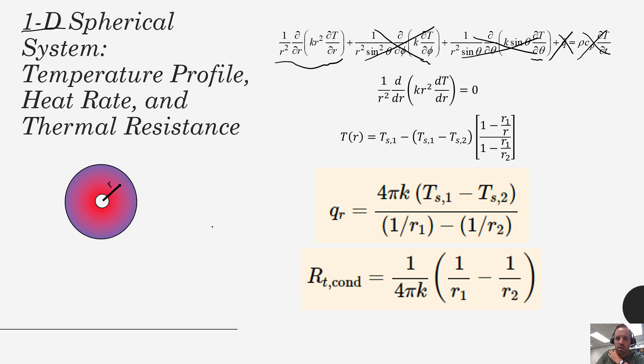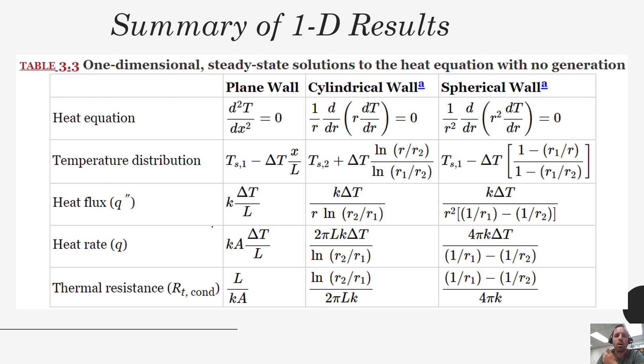However I also wanted to introduce this one handy table. We've done quite a bit of math as we've analyzed these three different types of systems: the plane wall, cylindrical, and spherical. Our textbook contains a really nice table that summarizes all of these different results that we've come up with. A summary of the 1D results and keep in mind that this is for one dimensional systems at steady state and there is no generation and also the thermal conductivity in each of these systems is constant.